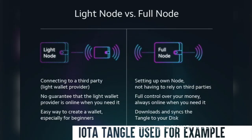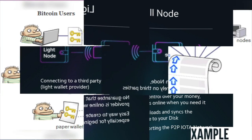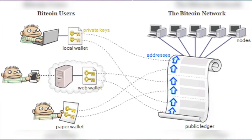A full node contains a full copy of the blockchain, while a Lite client is referencing a trusted full node's copy of the blockchain. This allows users to transact on the blockchain without downloading an entire copy. This is no small file — the entire history of the blockchain has to be downloaded, and for Bitcoin, this is about 27 gigs.